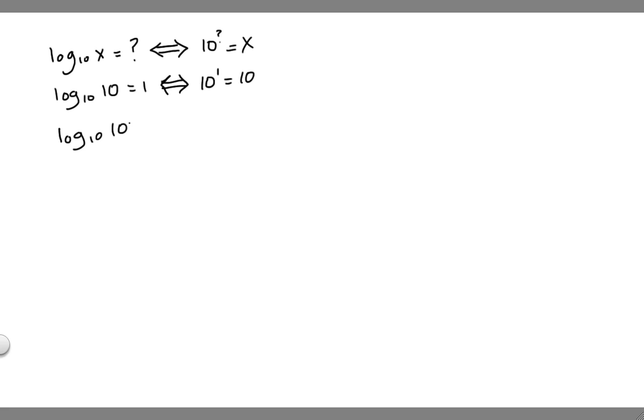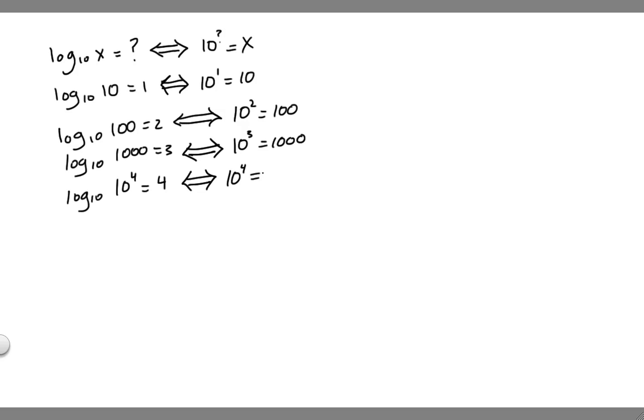Similarly, the log base 10 of 100 is 2 because 10 raised to the 2 is 100. Log base 10 of 1,000 is 3 because 10 to the 3 is 1,000. And the log base 10 of 10 to the 4th, well, that's equal to 4 because 10 raised to the what is equal to 10 to the 4th? Well, 10 raised to the 4th. Duh!